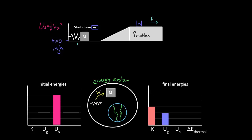We can write this as an equation: the total initial energy — spring energy one-half KX squared — plus external work done, which is zero since everything is internal, equals the final energy: kinetic energy one-half MV squared plus potential energy MGH. If you had numbers for a particular problem, you could plug those in and solve for whatever variable you're looking for.